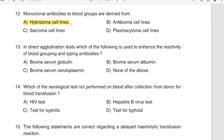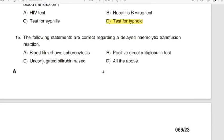Question 13: In direct agglutination test, which of the following is used? Question 15: The following statements are correct regarding a delayed hemolytic transfusion reaction. Correct answer: Option D — All of the above.